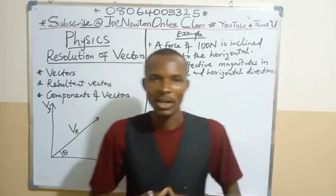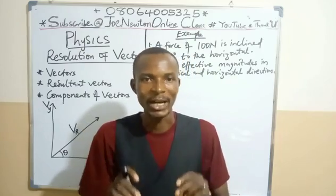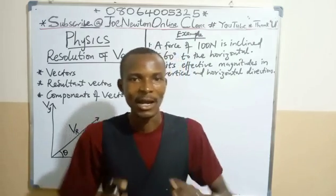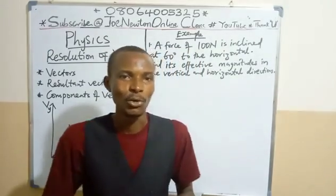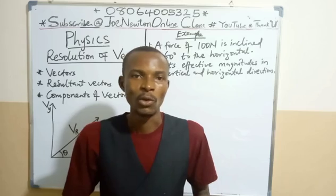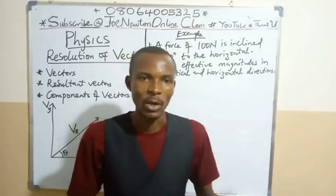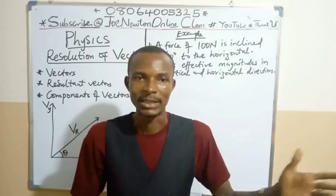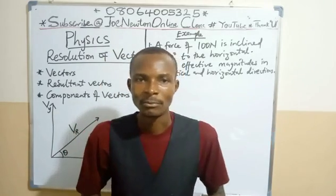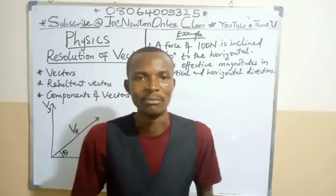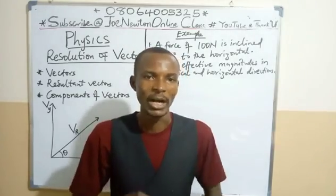We have the other quantities which are called vectors. Vector quantities are physical quantities that have both magnitude and direction — that is, they have both numerical values and direction. In vectors, you don't add them mathematically or algebraically. Rather, you resolve vectors by their direction and components. Examples of vector quantities include acceleration, displacement, force, and velocity.